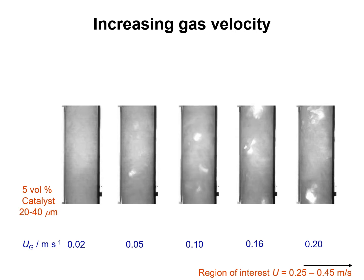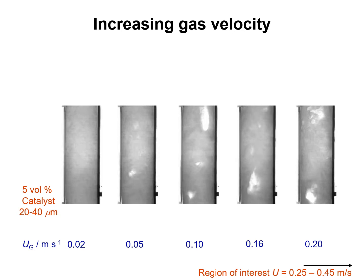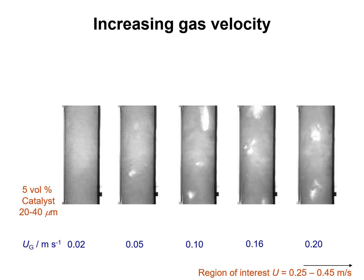At 10 cm per second, large bubbles travel through the center while small bubbles descend down the column. At 16 cm per second, large bubbles go up the center with small bubbles descending along the sides. At 20 cm per second, the same pattern continues — large bubbles going up the center and small bubbles descending down the column.